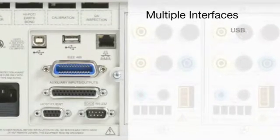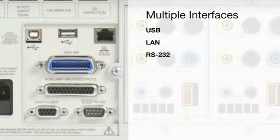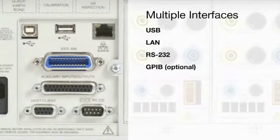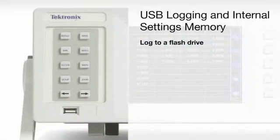For flexible control and data transfer, every PA-4000 comes with a USB device port, Ethernet port, and an RS-232 port. GPIB is available as an option. You can log measurements to your USB flash drive through the front panel USB port.